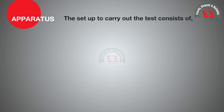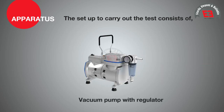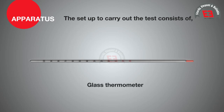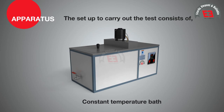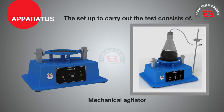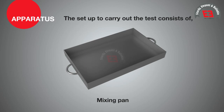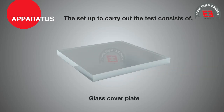Apparatus. The setup to carry out the test consists of: 1. Volumetric vacuum flask, 4 in number; 2. Vacuum pump with regulator; 3. Glass thermometer; 4. Constant temperature bath; 5. Hot air oven; 6. Mechanical agitator; 7. Weighing balance; 8. Mixing pan; 9. Glass cover plate.